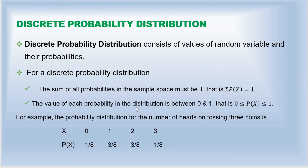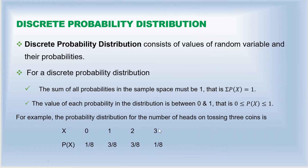The second condition is that the value of each probability in the distribution must be between 0 and 1 — that is, P(x) should always lie between 0 and 1. Looking at the probabilities 1/8, 3/8, 3/8, and 1/8, all of these are between 0 and 1. So because this probability distribution satisfies both conditions, this is a valid probability distribution — specifically for the number of heads when tossing three coins, where you may get 0, 1, 2, or 3 heads.